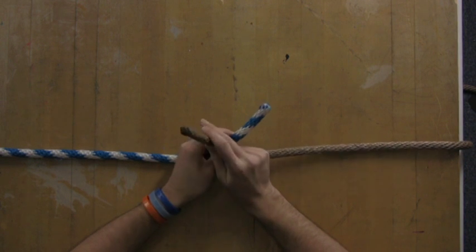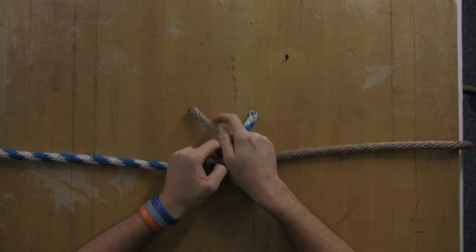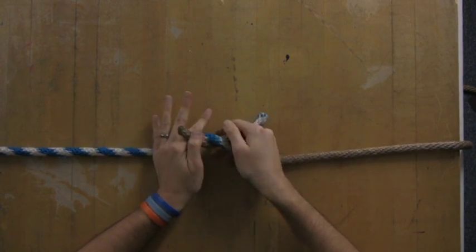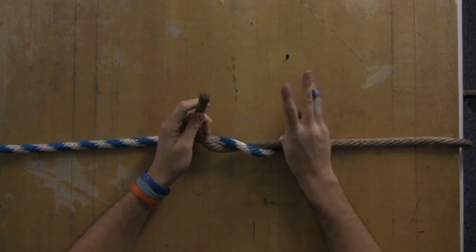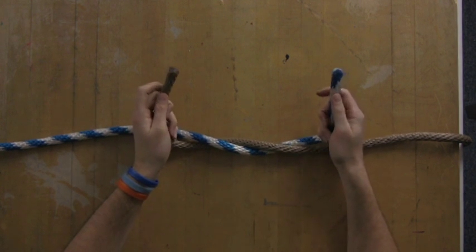This time I'm going to take my right hand, place it over my left hand knot, and then use my left hand to grab the strand that came through and pull it out a little bit.